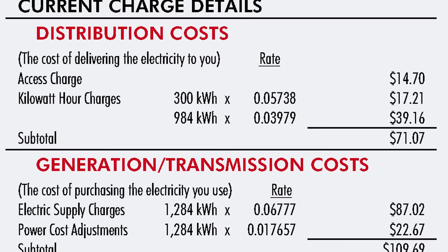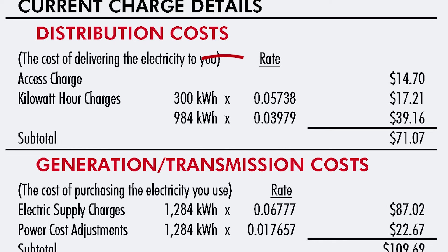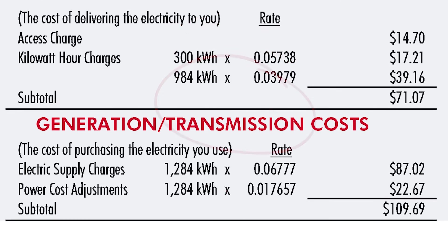Now let's look at the kilowatt hour charges. Here's how that works: the first 300 kilowatt hours used each billing period are subject to a slightly higher rate than the rest of your energy use.